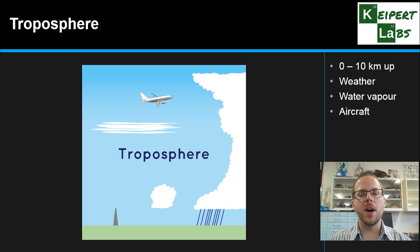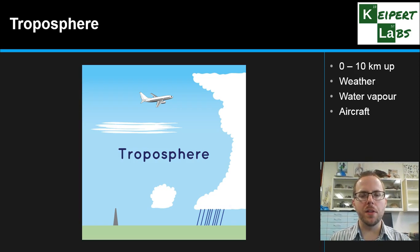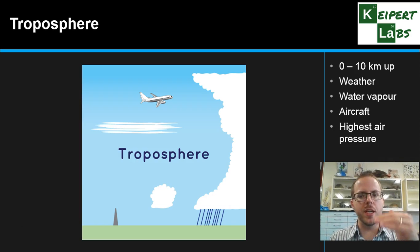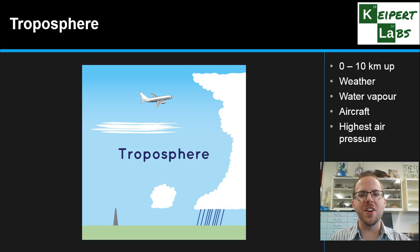Aircraft fly as high as they can manage so that there's a lower air pressure and lower air density, making it more fuel efficient. The troposphere has the highest air pressure because most particles, due to gravity, are closest to Earth. As altitude increases, air pressure decreases — that's one of the reasons it's hard to breathe at high altitudes.